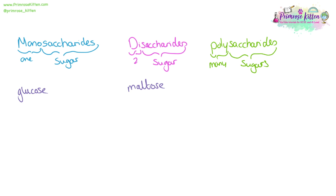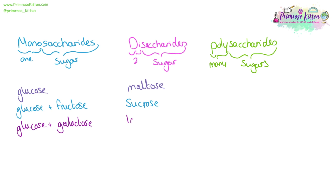Two glucose monosaccharides can be added together to make maltose. The monosaccharides glucose and fructose can be added together to make sucrose, and glucose and galactose can be added together to make lactose. All of these end in O-S-E, and that's a really good way to identify something that is a sugar.